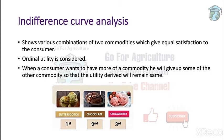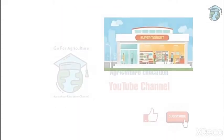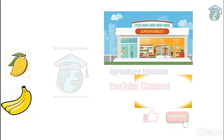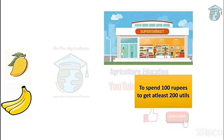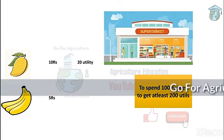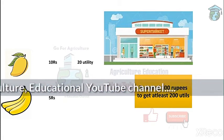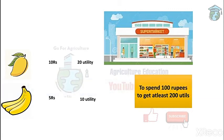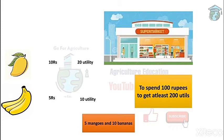In indifference curve analysis, when a consumer wants more of a commodity, he will give up some of the other commodity so that the utility derived remains the same. For example, suppose you have decided to spend 100 rupees and you are expecting a utility of 200 utils. The question is: how many mangoes and bananas do you need to buy so that the money spent is 100 rupees and the utility obtained is 200 utils? The answer is 5 mangoes and 10 bananas.